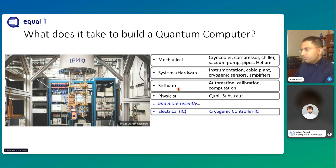The quantum computers being built today and shipped as product hire mechanical engineers to develop the cryocooler, the compressor, vacuum pipe pumps, and pipes and helium circulation. They hire systems and hardware engineers to control the instrumentation, cable plans, cryogenic samplers, sensors, and amplifiers. They hire software engineers to handle automation, calibration, and computation. And they hire physicists to design the physical substrate. More recently, we're seeing an influx of electrical engineers and specifically IC designers to design what I call the cryogenic controller integrated circuit, which we'll discuss in detail in this presentation. This is a new trend, and it's going to be a growing trend in the future.